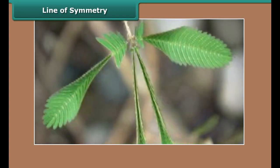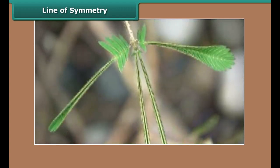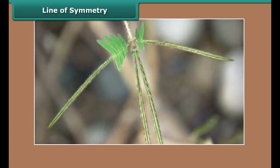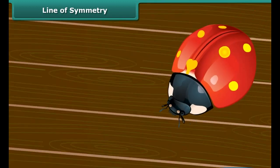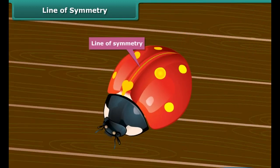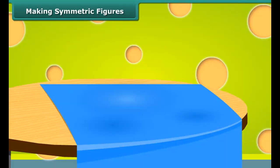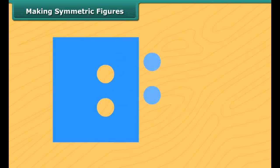Look at the touch-me-not plant's leaves. When you touch it, it folds in halves. Can you see the two halves matching each other? This particular line created by the folding of the leaves is called the line of symmetry. This bug also has a line of symmetry along which it folds into two identical halves.